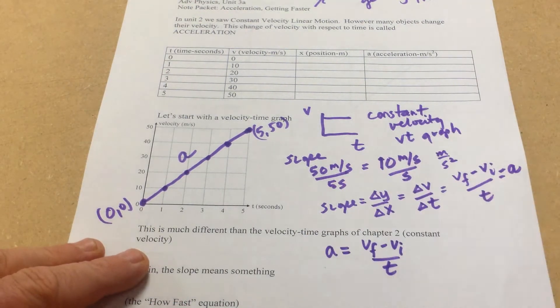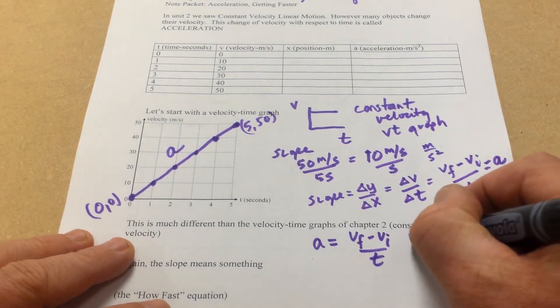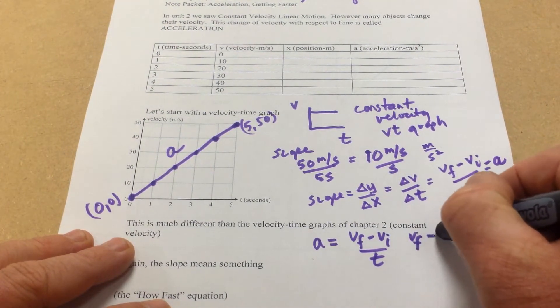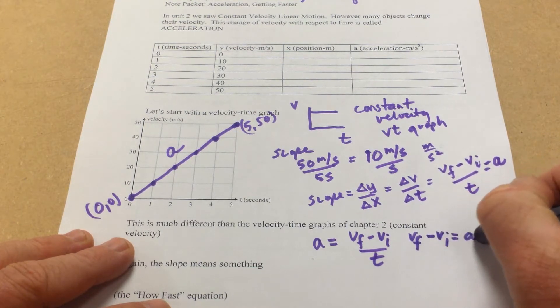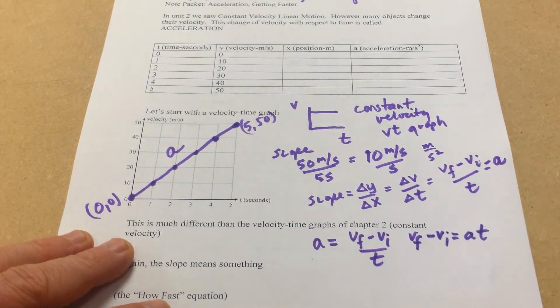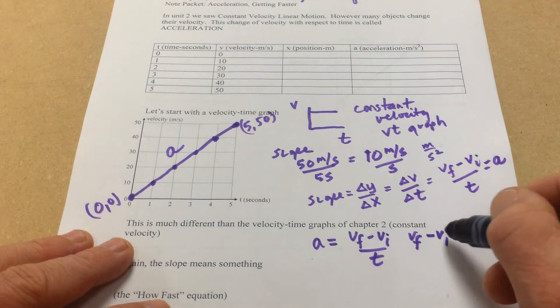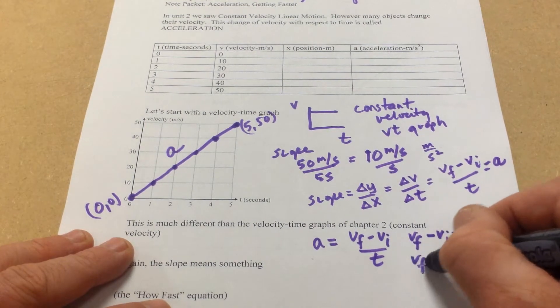Let's put T on the other side, giving us Vf minus Vi equals At. Then let's put Vi on the other side.